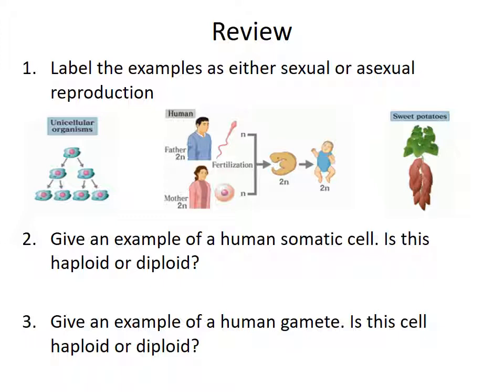Question two asks for an example of a human somatic cell and whether it's haploid or diploid. A human somatic cell is like your regular body cell — a liver cell, skin cell, bone cell, or a photoreceptor in your eye. Those would all be somatic cells, and in humans our body cells are going to be diploid. Question three asks for an example of a human gamete and whether it's haploid or diploid. Human gametes are sperm or egg, and they are going to be haploid.